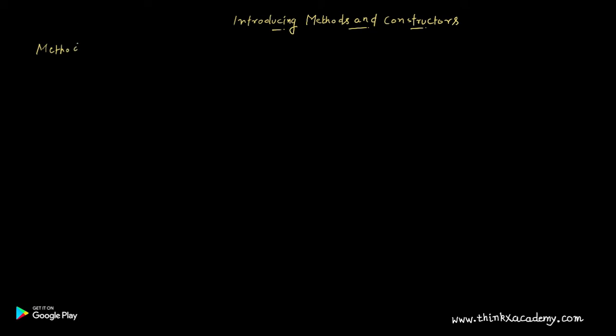In this tutorial we are going to talk about methods and constructors in Java. Methods and constructors are both functions, so let's discuss methods first. Methods are basically functions. A function is used to perform some operations based upon some input and then it gives some output — if you give some input to a function, it is more likely to give you an output.